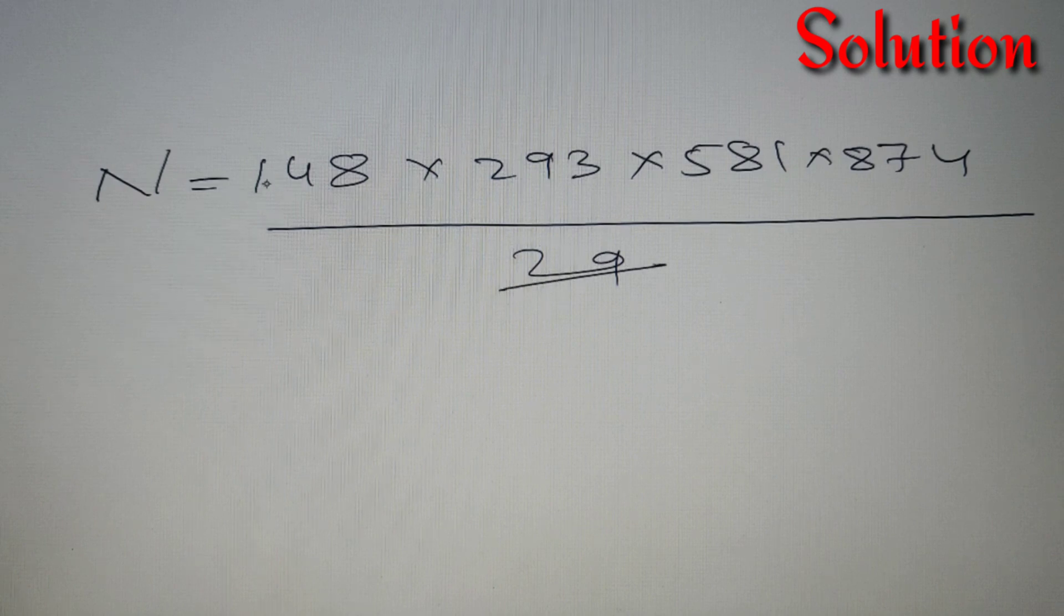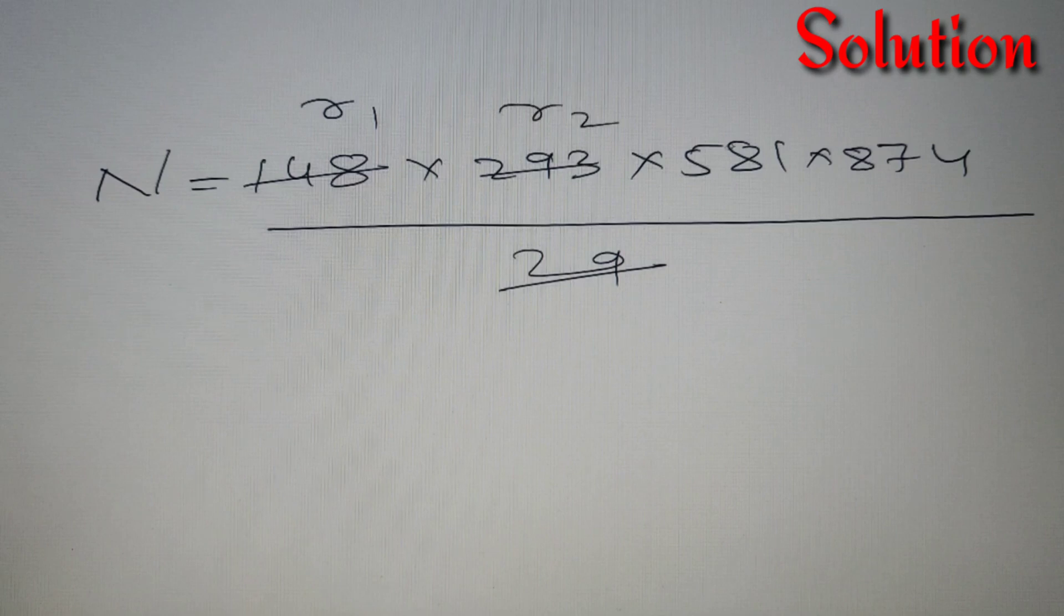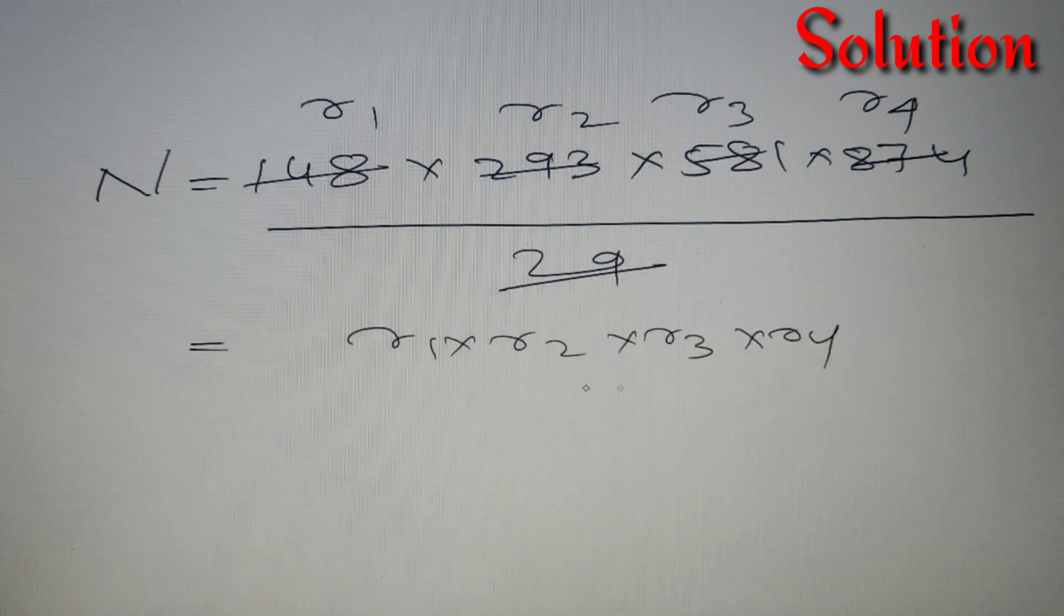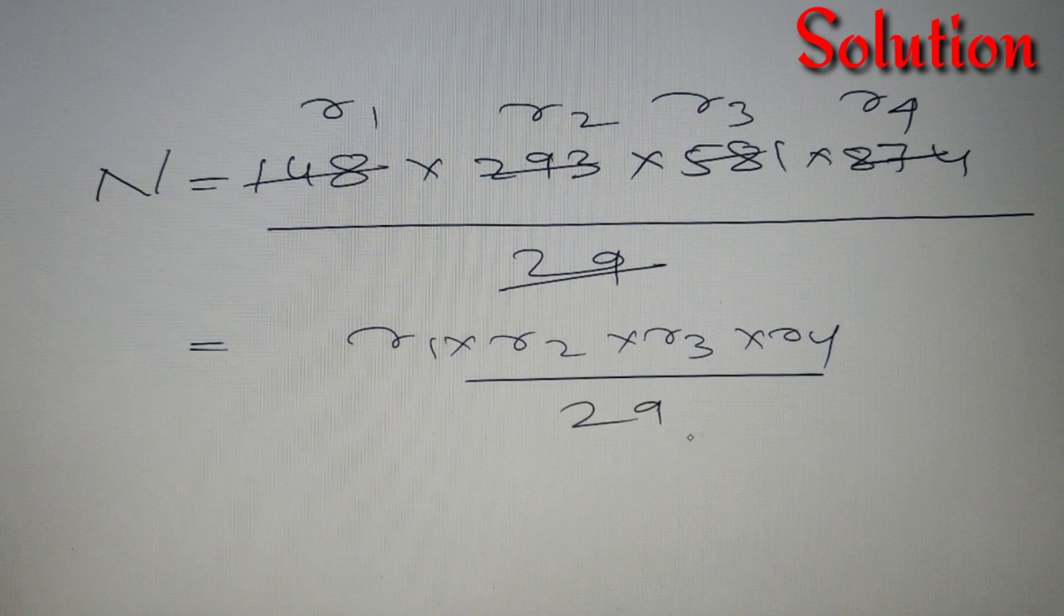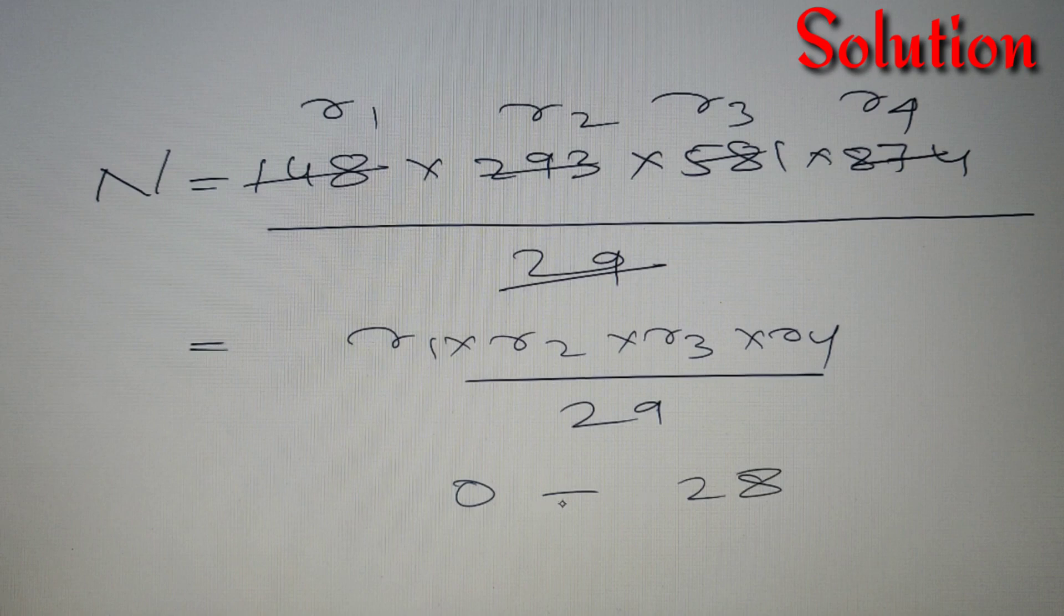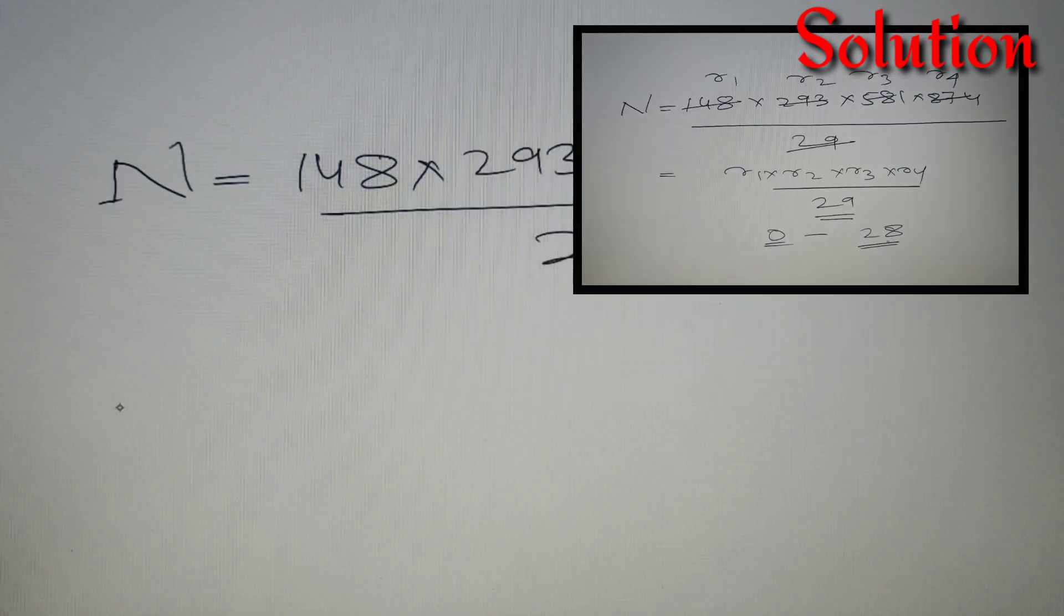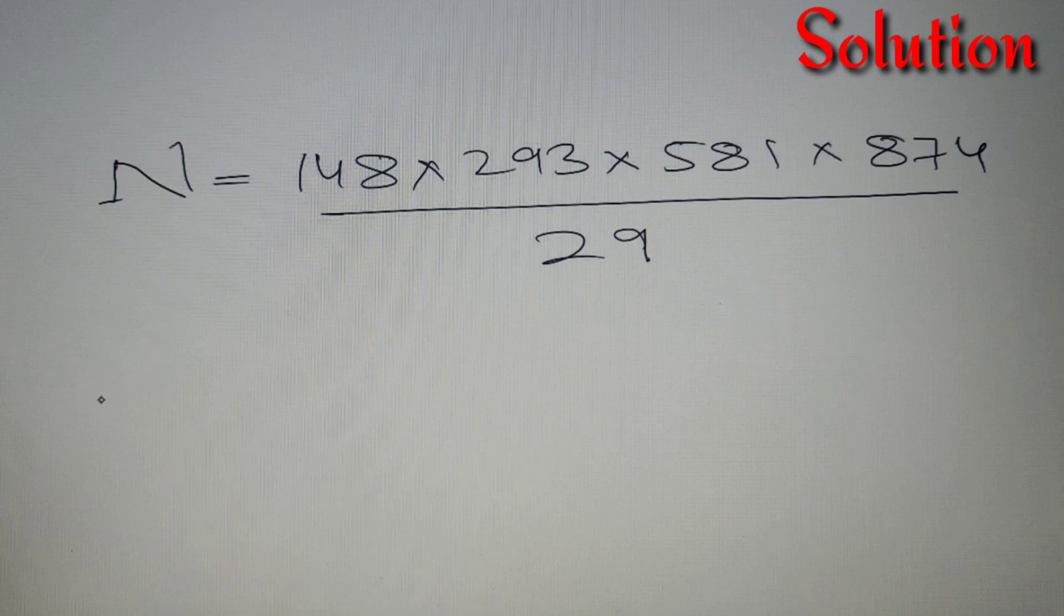According to the property of remainder, when 29 divides 148 the remainder is R1, for 293 it is R2, for 581 it is R3, and for 874 it is R4. We can write it as R1 into R2 into R3 into R4 divided by 29 until the number comes as 0 or any number between 0 to 28. The remainder must be between 0 or that number minus 1. So done with theoretical portion and let's solve the question.